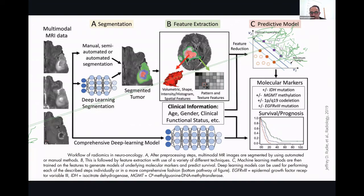On the right side of the slide, you can see that there's a cross-correlation between the imaging findings and the molecular genetics and also neurochemical findings, including the positive or negative status for IDH mutation, positive or negative status for MGMT methylation status, and also positive or negative status for 1p19q co-deletion and EGFR mutation.